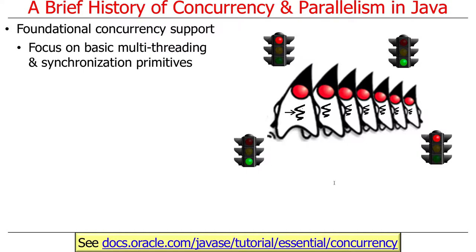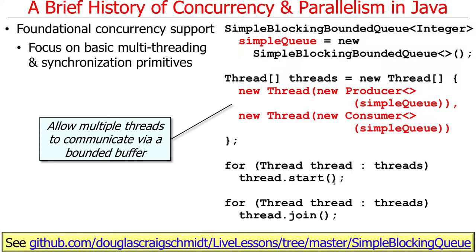The focus in the early days of Java was on very basic multi-threading and very basic synchronization primitives. You've got a bunch of threads and synchronizers to let them coordinate their interactions. Here's a very simple example — the simple blocking queue example, which is actually a refinement of the buggy queue example we talked about before. The buggy queue intentionally had race conditions; this solution does not. We make a queue that's a simple blocking bounded queue, shared between a producer object and a consumer object running in two separate threads.